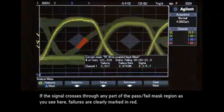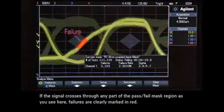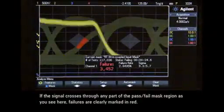If the signal crosses through any part of the pass-fail mask region, as you see here, failures are clearly marked in red.